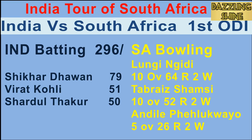Fourth ball of the 17th over, Nagidi to Kohli — he plays a beautiful shot through mid-wicket and that's gone for four runs. Second ball of the 19th over, Nagidi to Dhawan — a beautiful cover drive by Dhawan and it's gone to the boundary rope.